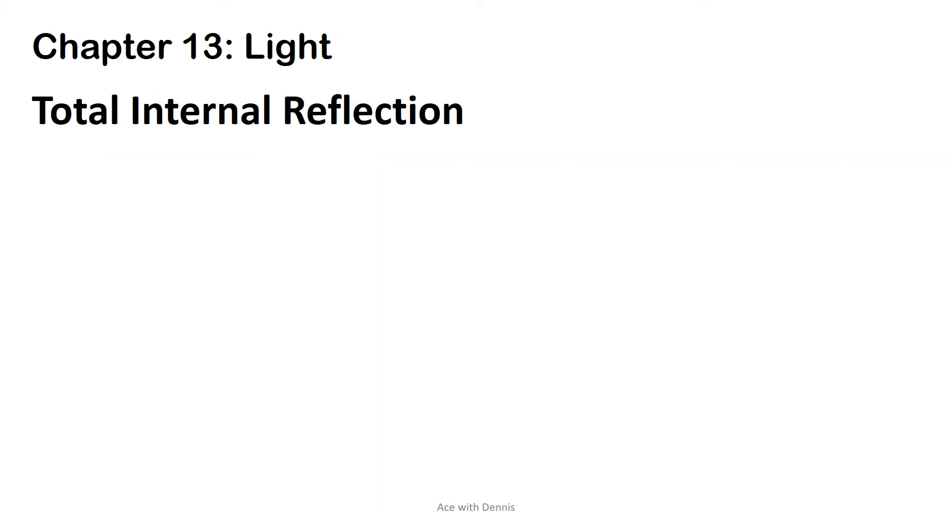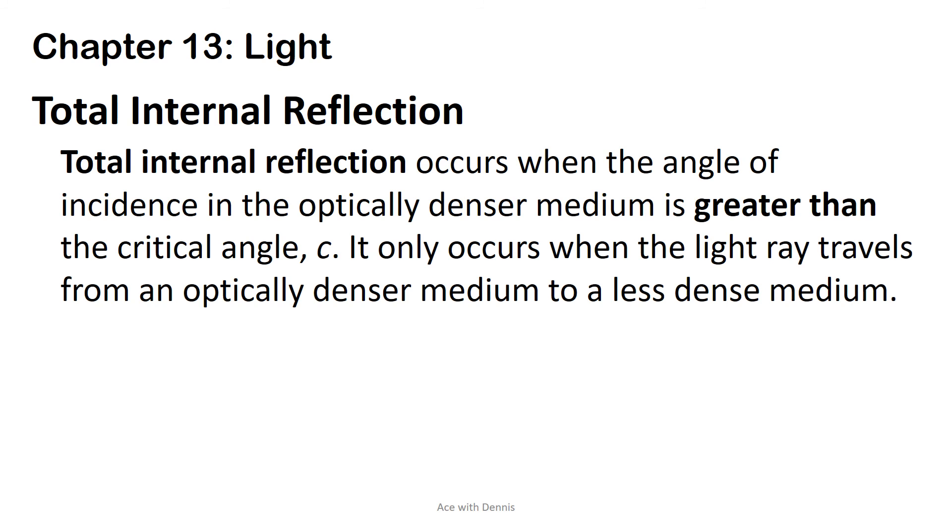Total internal reflection. Total internal reflection occurs when the angle of incidence in the optically denser medium is greater than the critical angle, C. It only occurs when the light ray travels from an optically denser medium to a less dense medium.